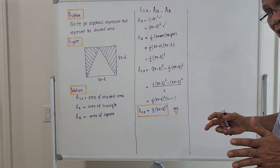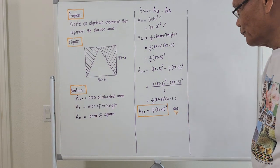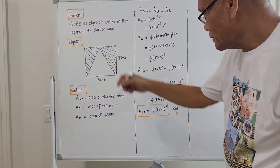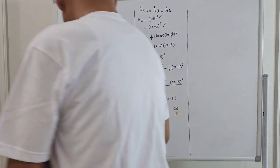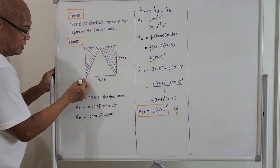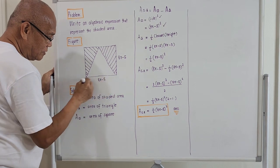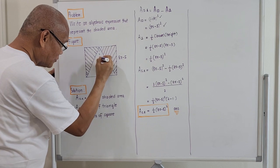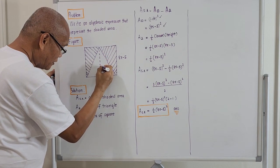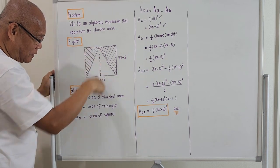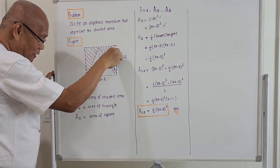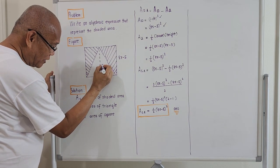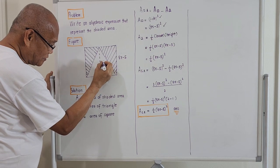Now for the area of the triangle: it should be one half the product of the base times its height. The height of the triangle is actually the side of the square — if we drop a vertical line here, that vertical line is parallel to the side, so the height is also 8x minus 5.